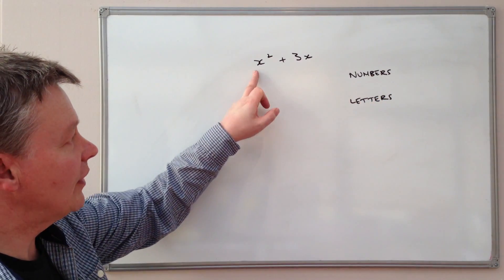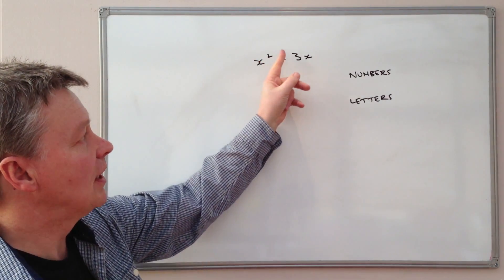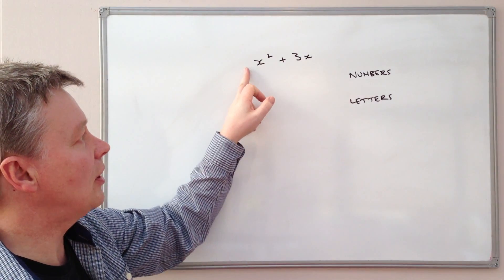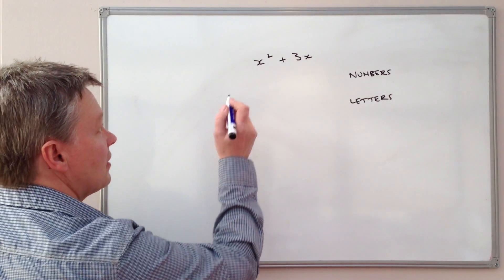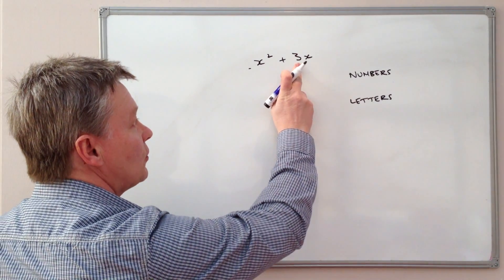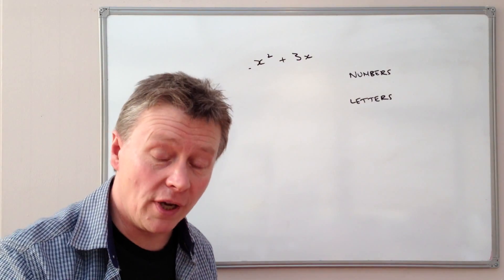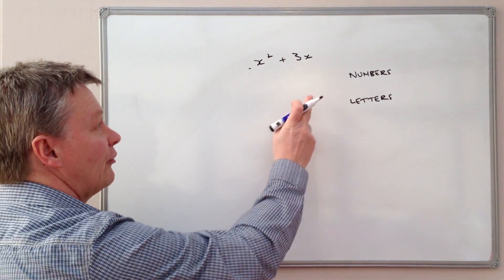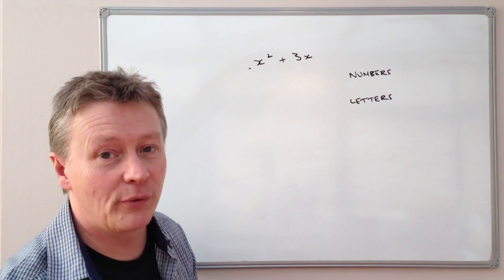So if we look at this expression here, and we look at that first term and then the second term, what we're saying is, are there any numbers which are common to both terms? Well, there isn't, because here there would be a 1, because it's 1x squared. And here there's 3x, but 3 and 1 have no number in common. In other words, they don't have a factor in common. So, unfortunately, with this particular expression, we've got to ignore the numbers.